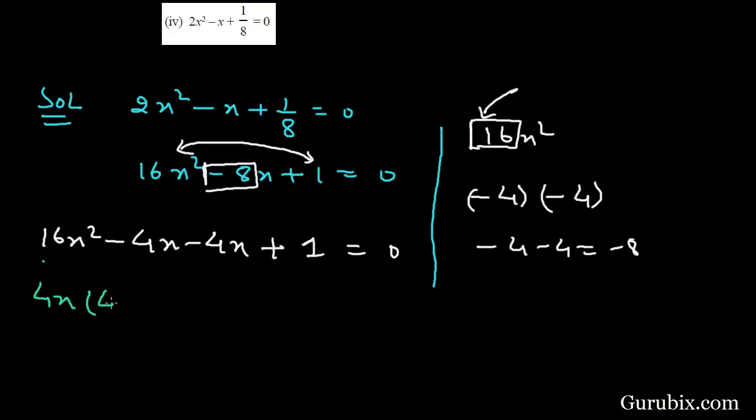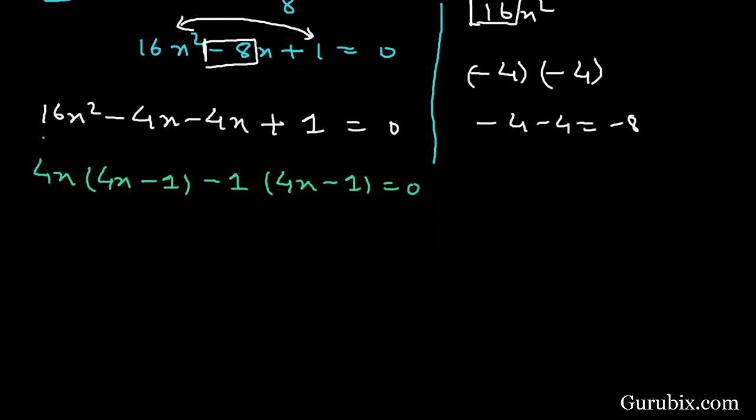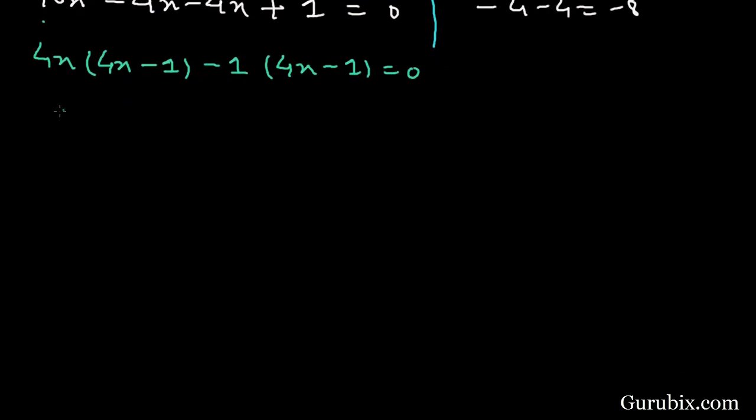Then we have 4x(4x - 1), here we have -1(4x - 1) = 0. So now we have (4x - 1)(4x - 1) = 0.